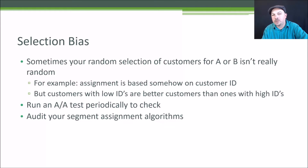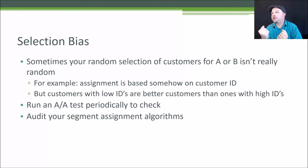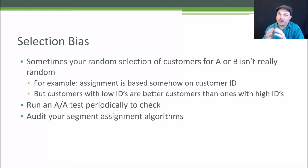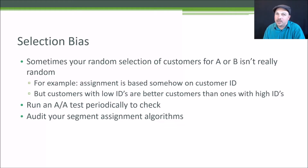One way to do that is running what's called an AA test. If you actually run an experiment where there is no difference between the treatment and control, you shouldn't see a difference in the end result. There should not be any sort of change in behavior when comparing those two things. An AA test can be a good way of testing your AB framework itself and making sure there's no inherent bias or other problems — for example, session leakage — that you need to address.